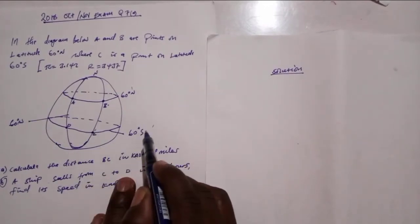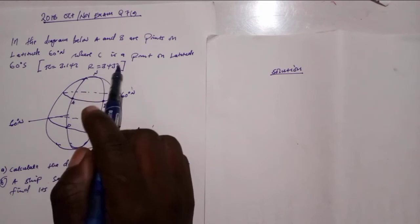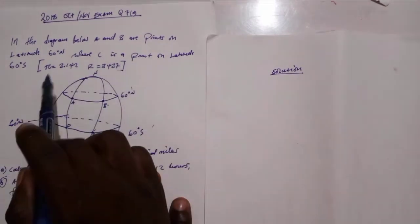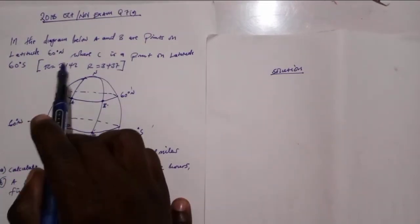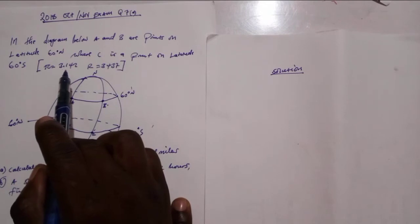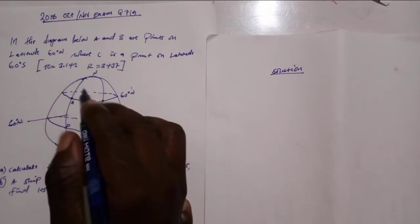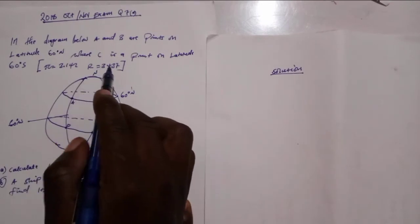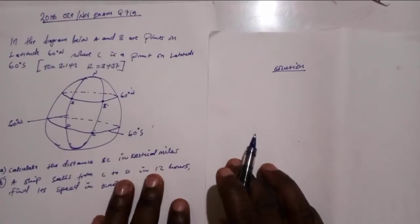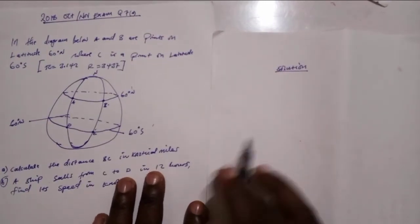60 south, and we are told to take pi as 3.142. Now let's get started for solution.